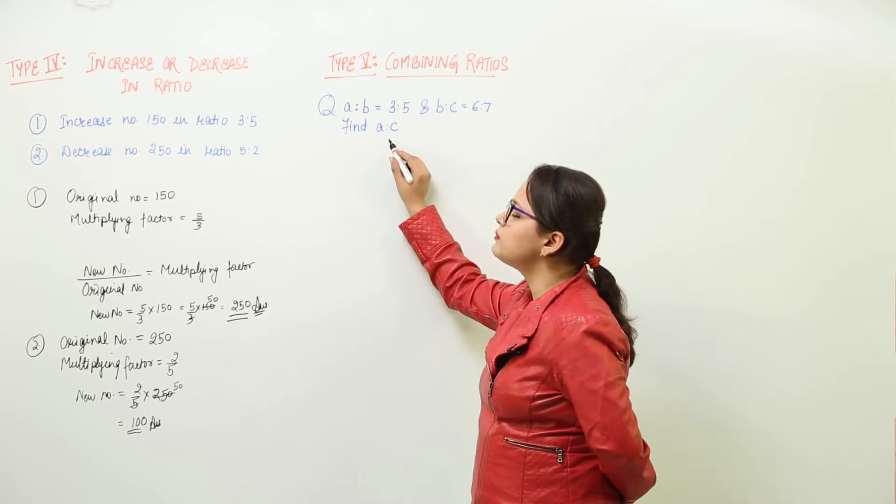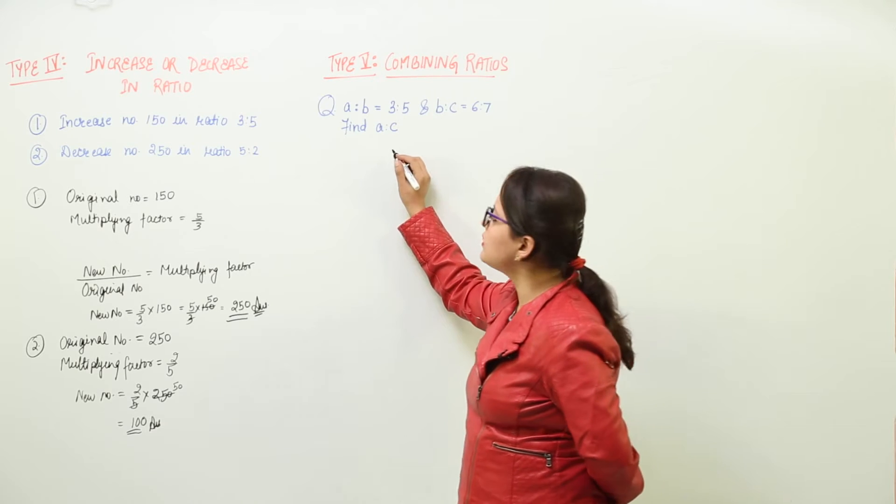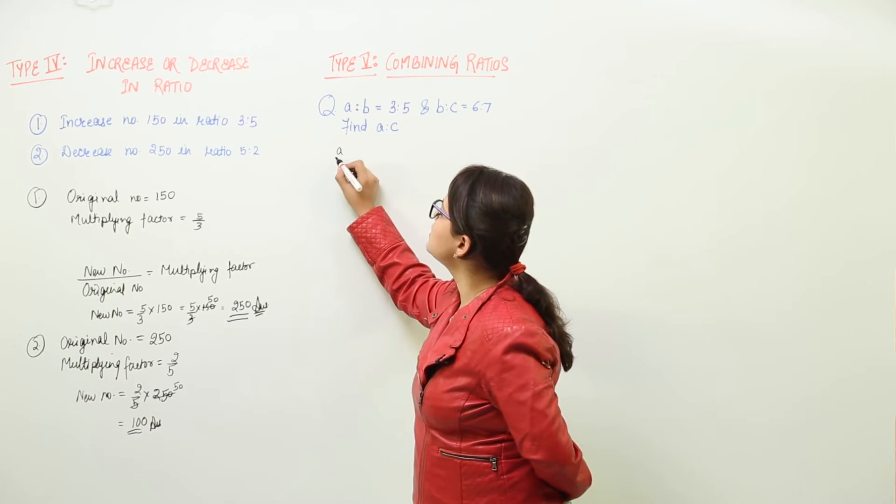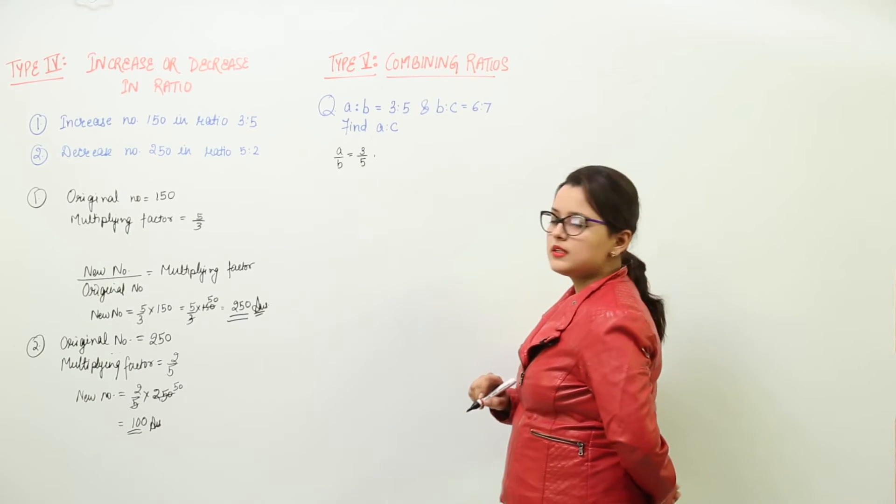we have to find out what will be A is to C. So first, let us write what is given, that is A ratio B. We can write A upon B equal to 3 upon 5. Right.